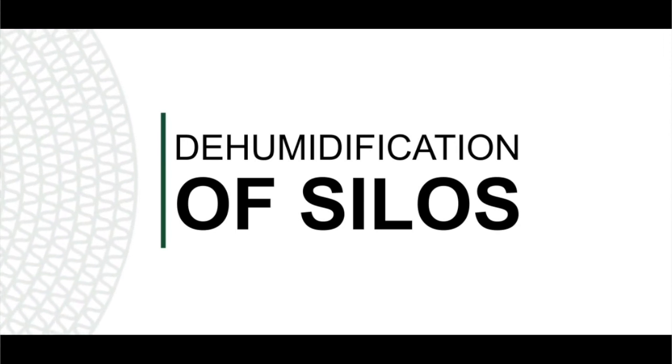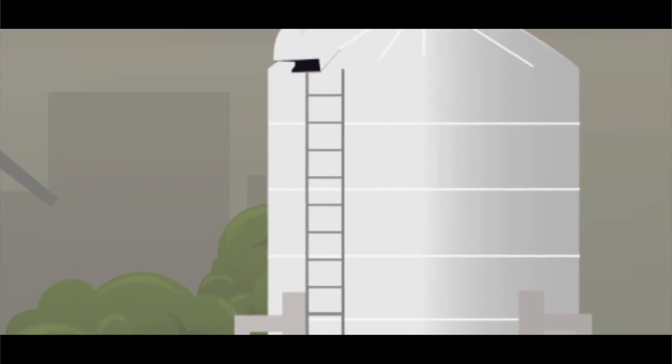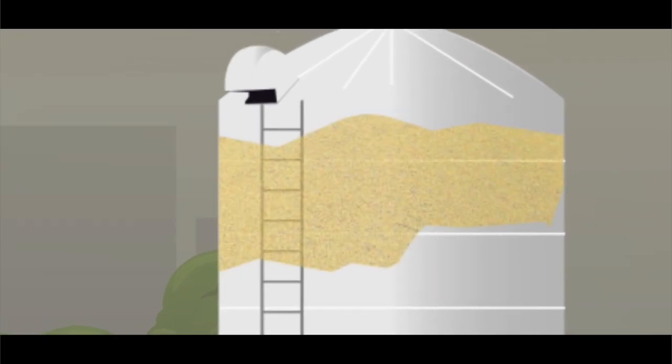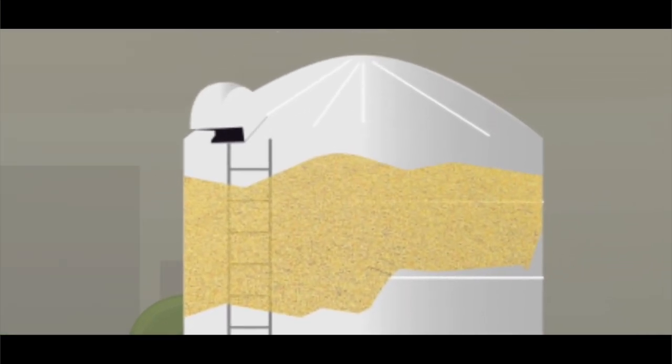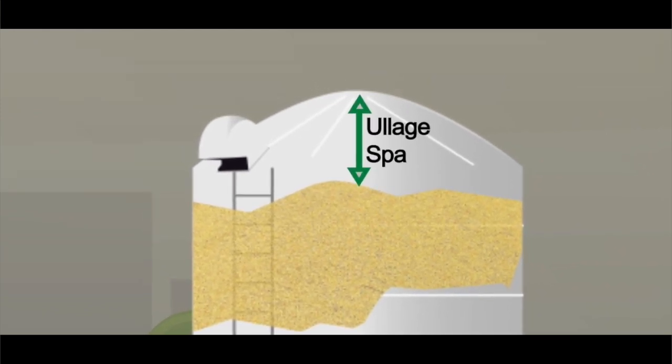Dehumidification of silos. Silos are often steel structures that hold tons of bulk commodities and are not filled to the brim, leaving a space between the top of the stored product and the silo roof known as eulage space.